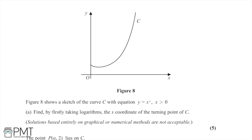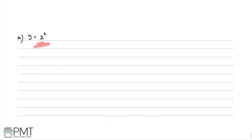In this question we're shown figure 8, a sketch of curve C with equation y = x^x. In Part A, for five marks, we're asked to find the x-coordinate of the turning point of C. We're told to take logarithms. To find a turning point, we find the derivative and set it equal to zero. So first, as the question says, we're going to take logarithms of both sides.